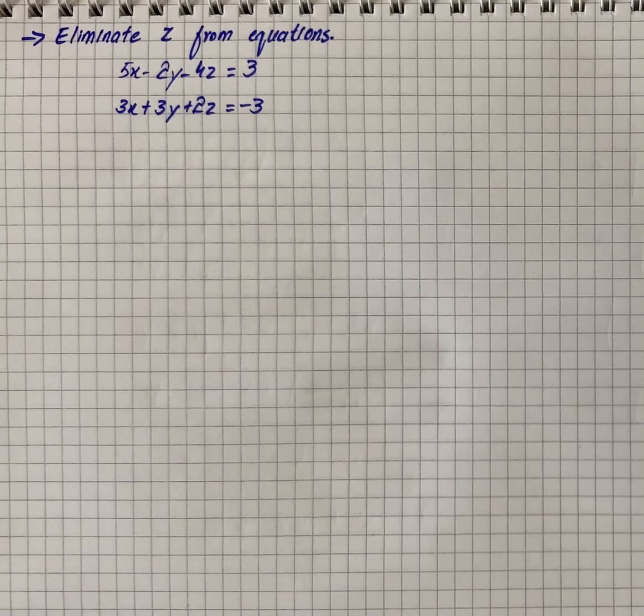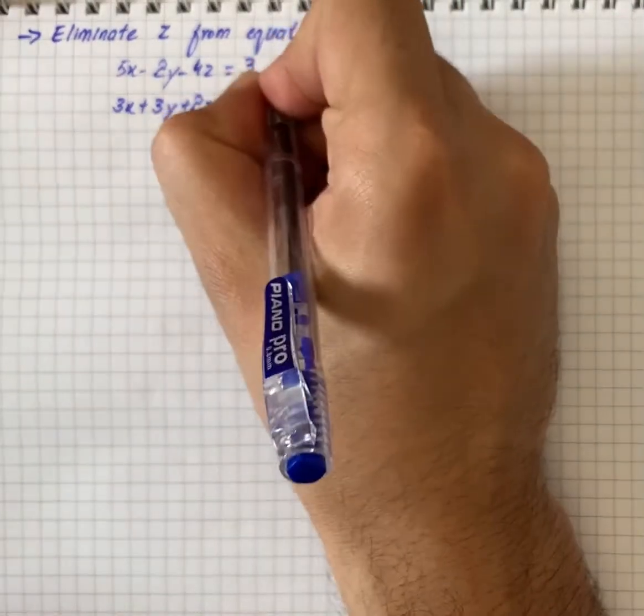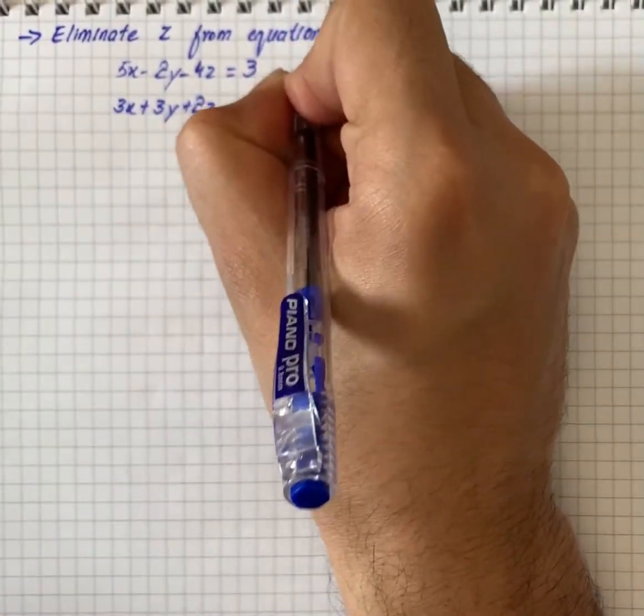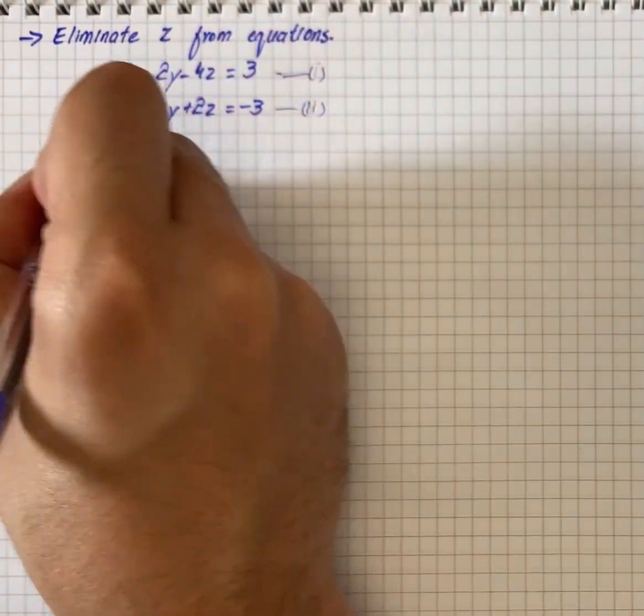Here we have an equation to solve and we actually have to eliminate z from the equation. We will name this equation as equation number 1 and this one as equation number 2.